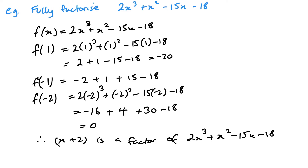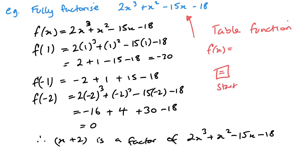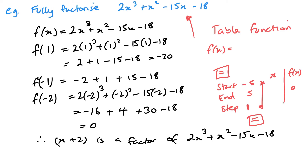Before we go any further, you can use the table function in your calculator to help with this. The table function will bring up f(x) equals — you just stick in your expression. When you press equals, you get options for start, end, and step. Keep the step at 1 because you want whole numbers, and I usually set start and end between minus 5 and plus 5. You'll see an x column and an f(x) column, and you're looking for where f(x) says 0. In my case it would have shown minus 2, so I know straight away that's what to substitute in.